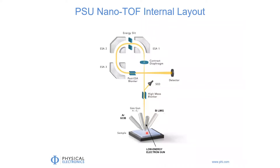In a TOF-SIMS instrument, the charge-to-mass ratio sorting is achieved by measuring the flight time of a particular ion. The lighter ions move through the system much more quickly than the heavier ions, and so the charge-to-mass ratio of an ion is related to the amount of time it takes for the ion to travel from the sample surface through the mass spectrometer and onto the detector.